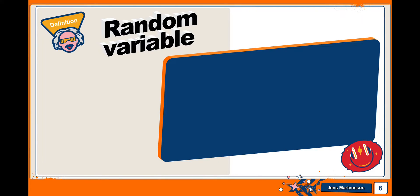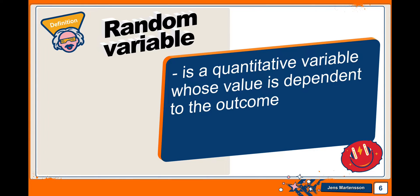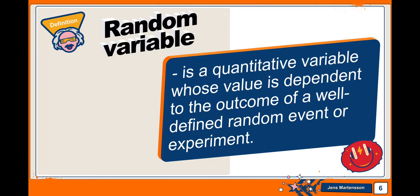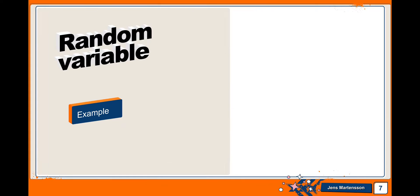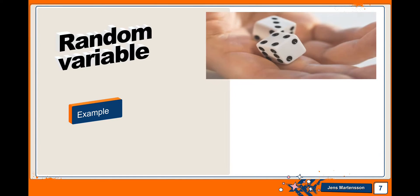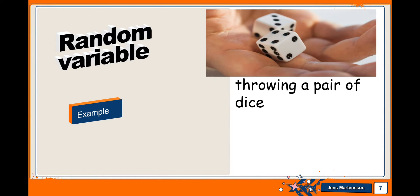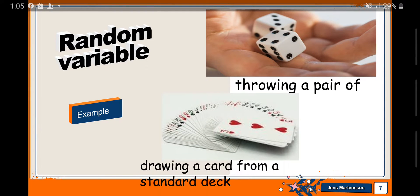And we define random variable as a quantitative variable whose value is dependent to the outcome of a well-defined random event or experiment. And the set of all possible outcomes in an experiment is called sample space. Example of random variable is throwing a pair of dice, drawing a card from standard deck.